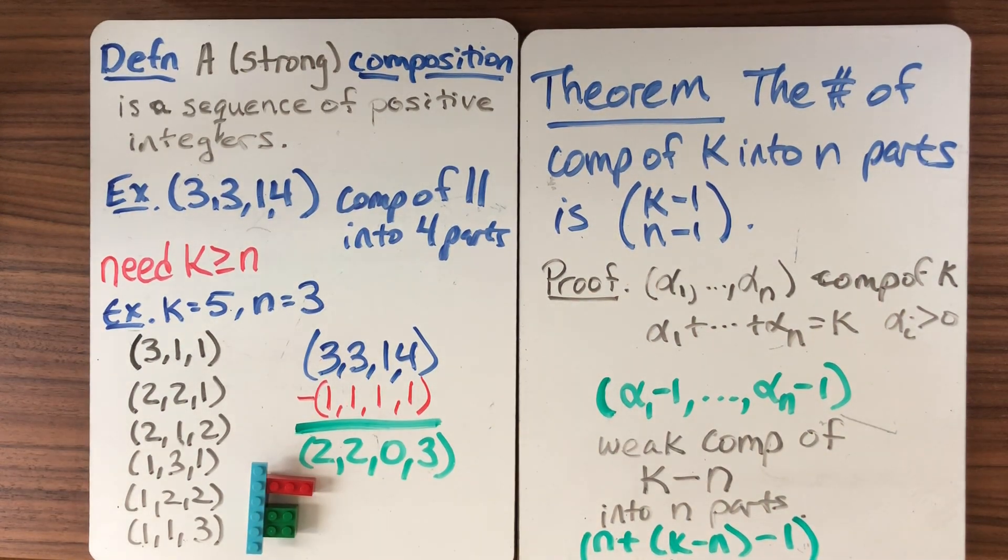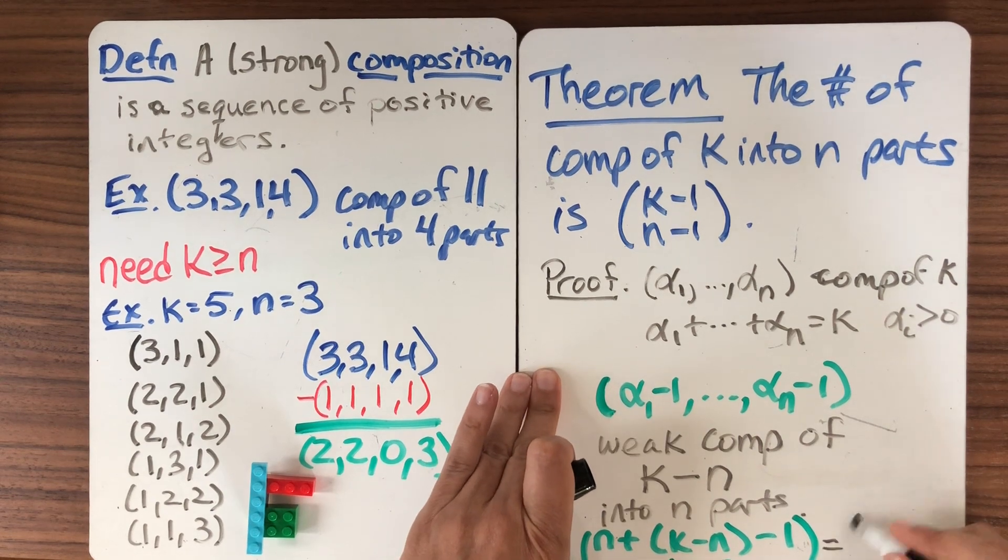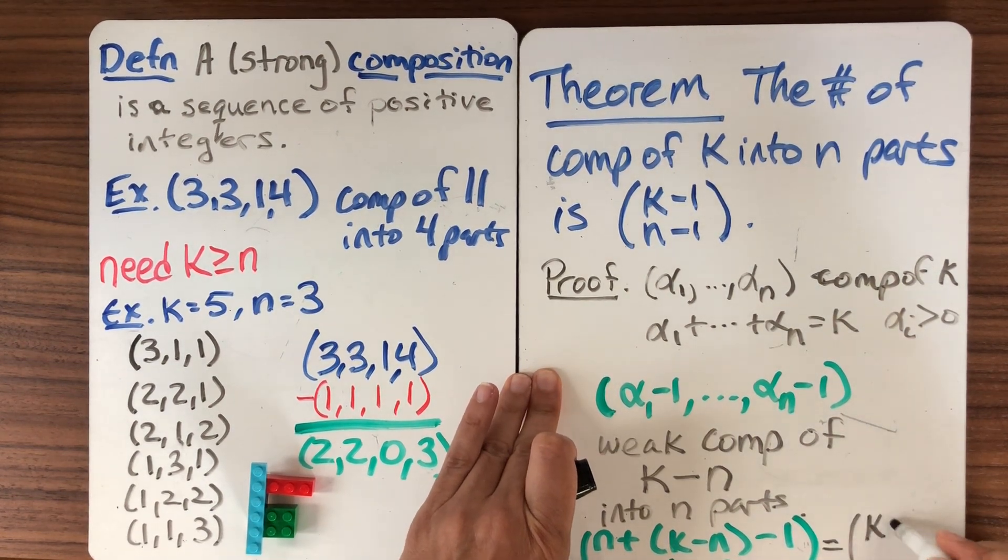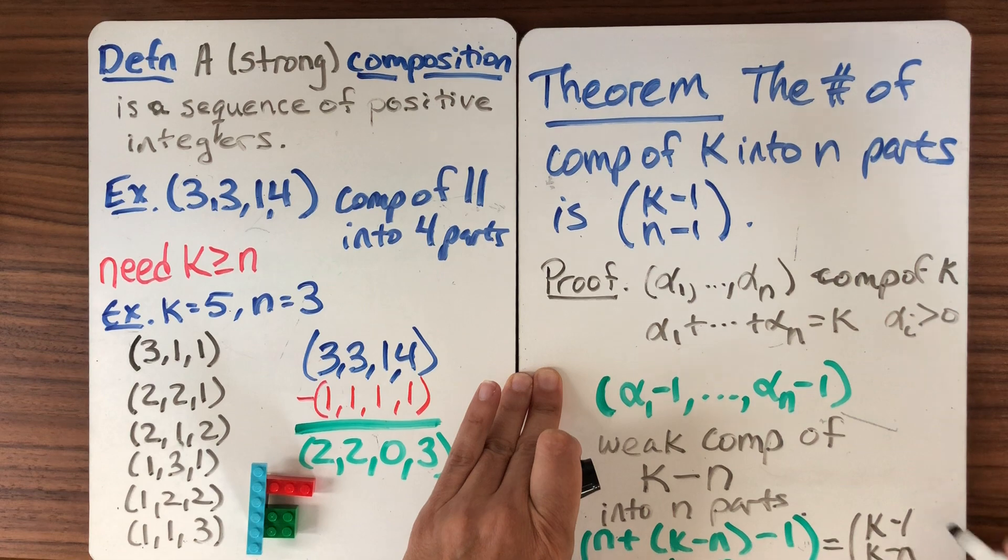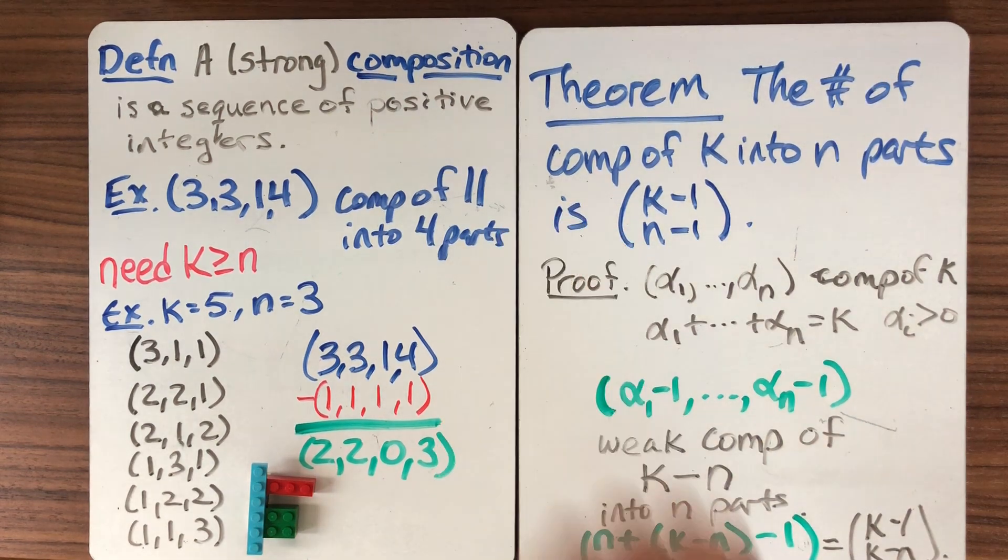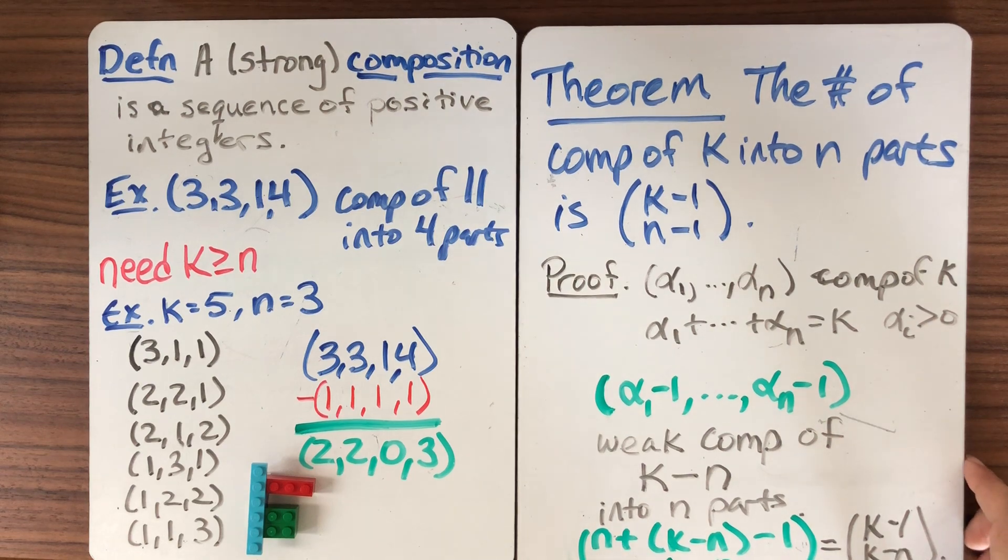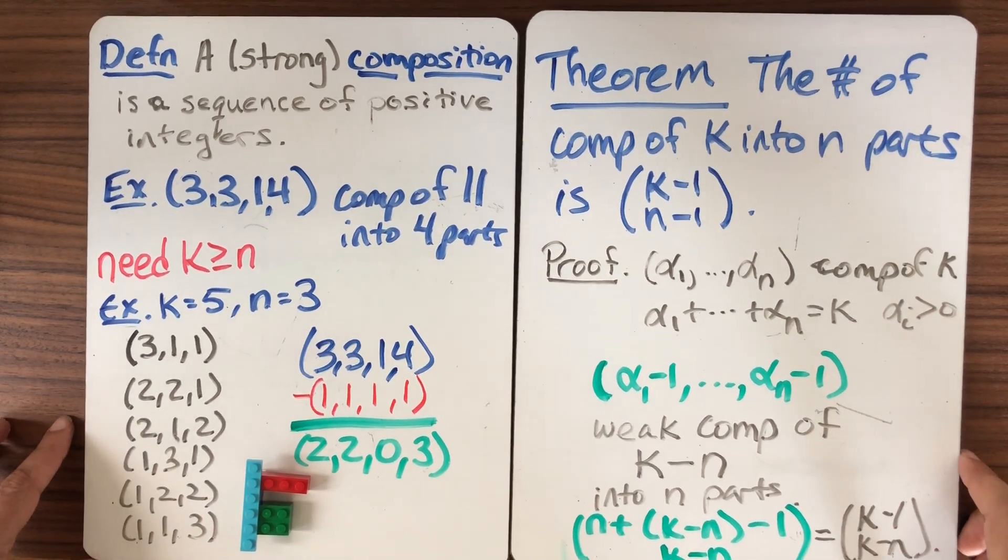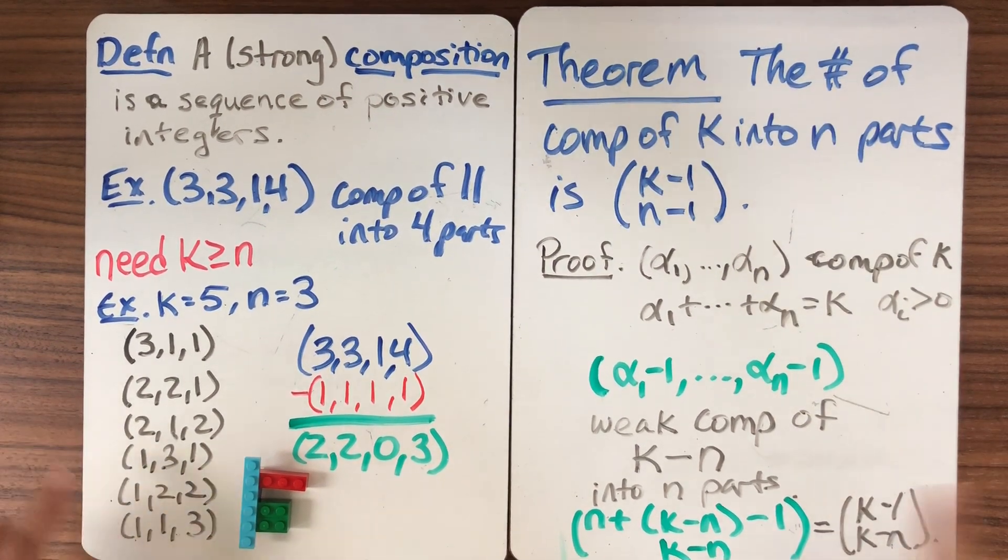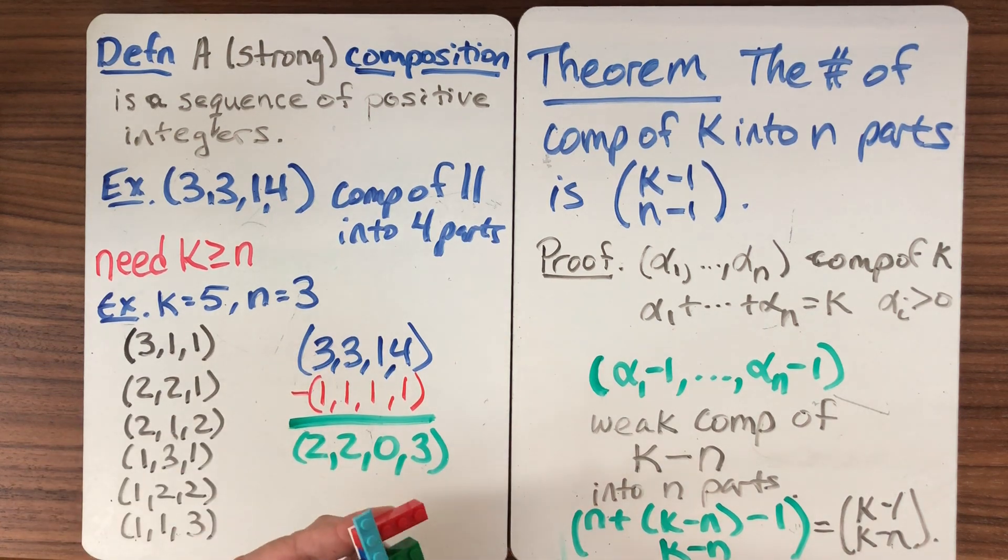And now to finish the proof, we could just say, well, simplify this and I get up at the top. This is just going to be (k-1) choose (k-n), which of course, another way to write is (k-1) choose (n-1). So now we've counted the number of strong compositions as well by taking this really nice geometric way to relate the strong ones with the weak ones in a bijective correspondence.